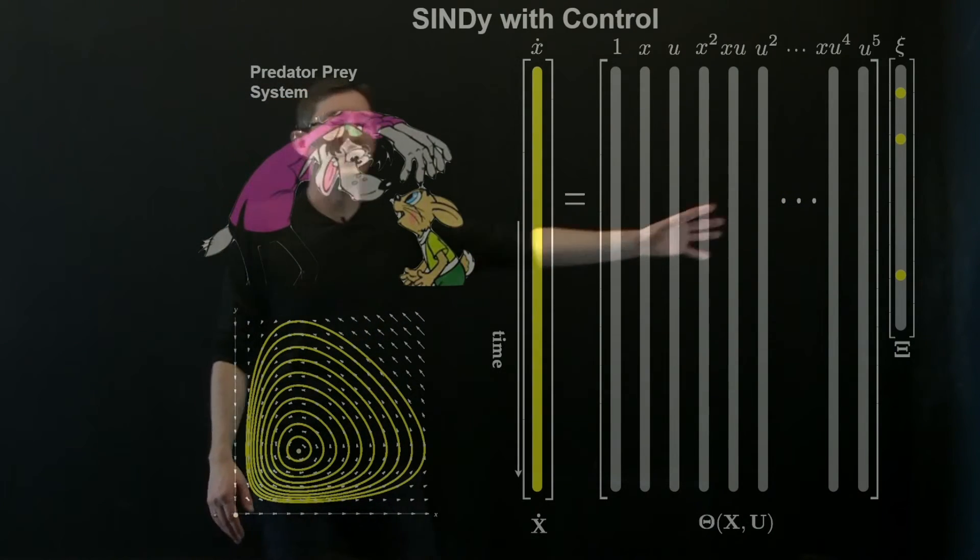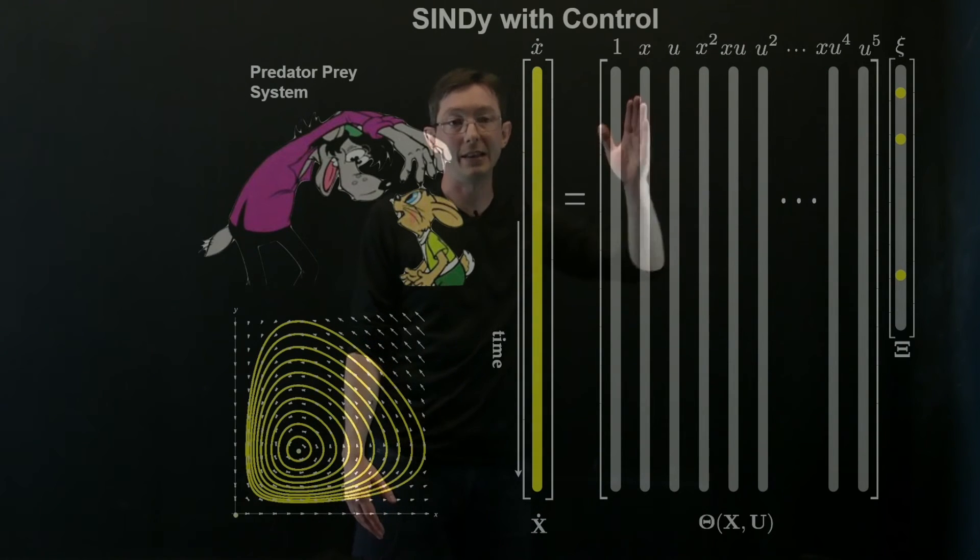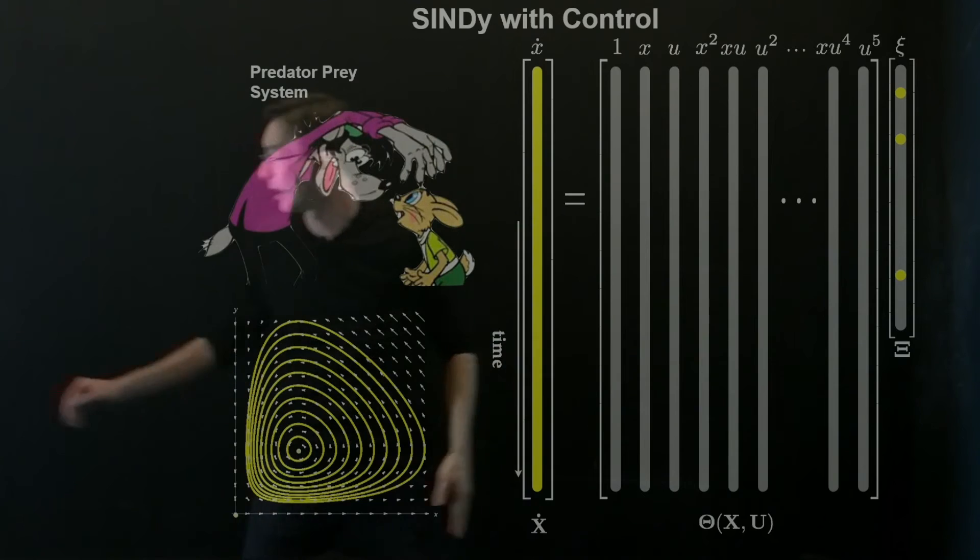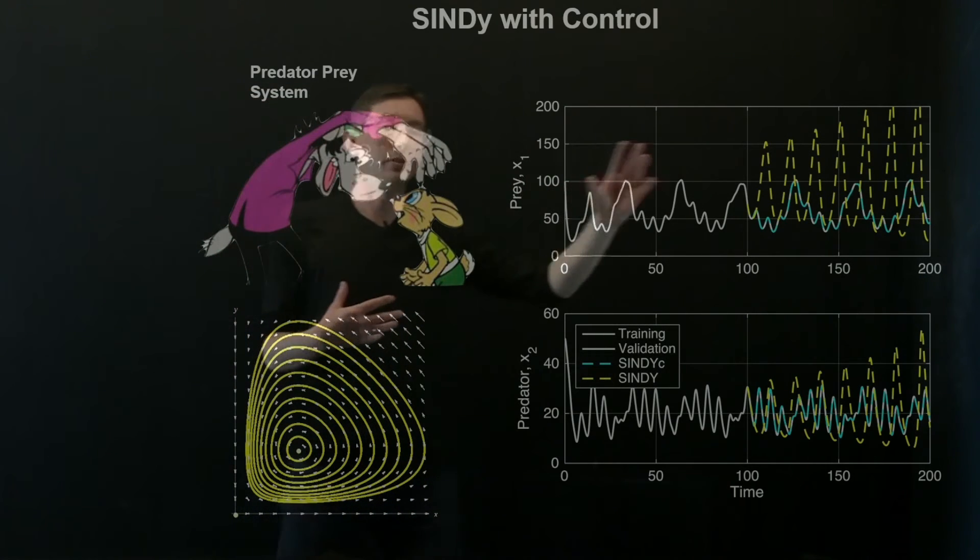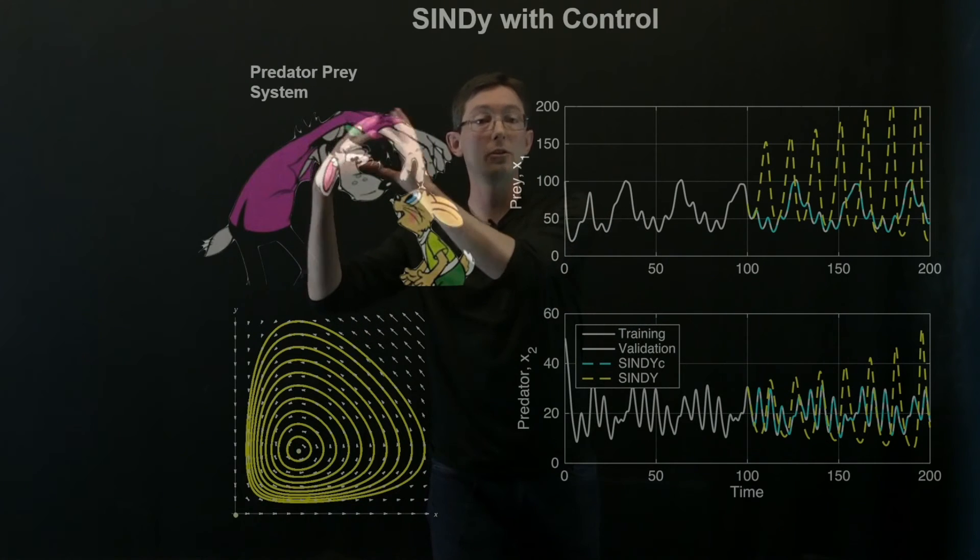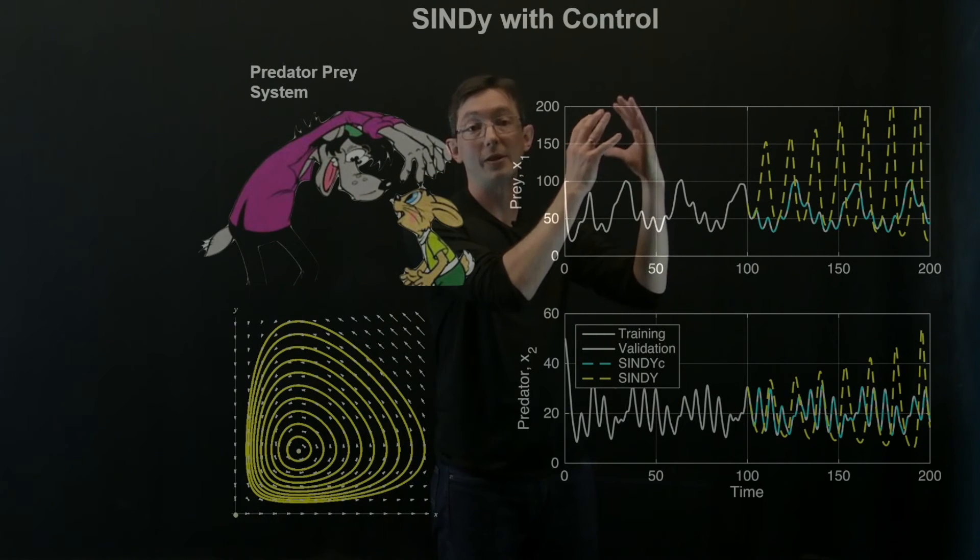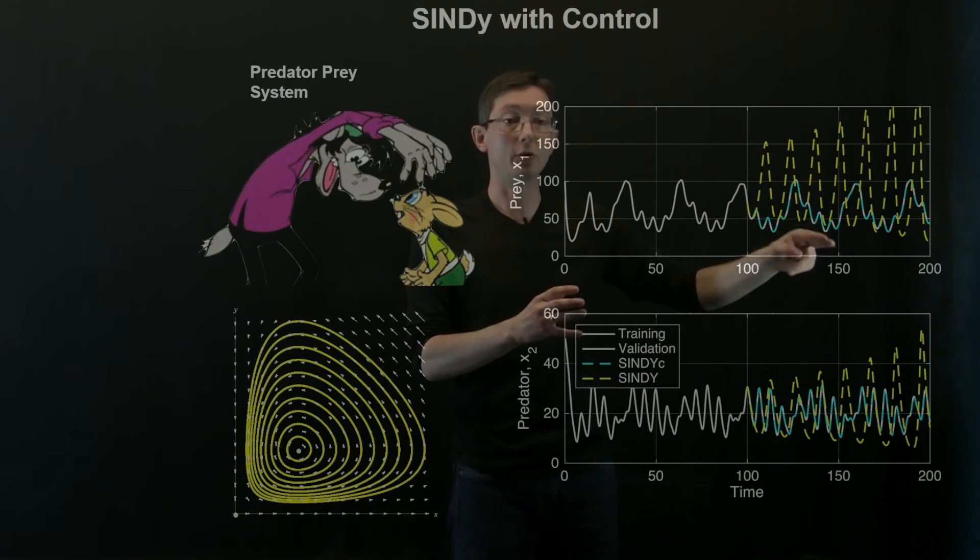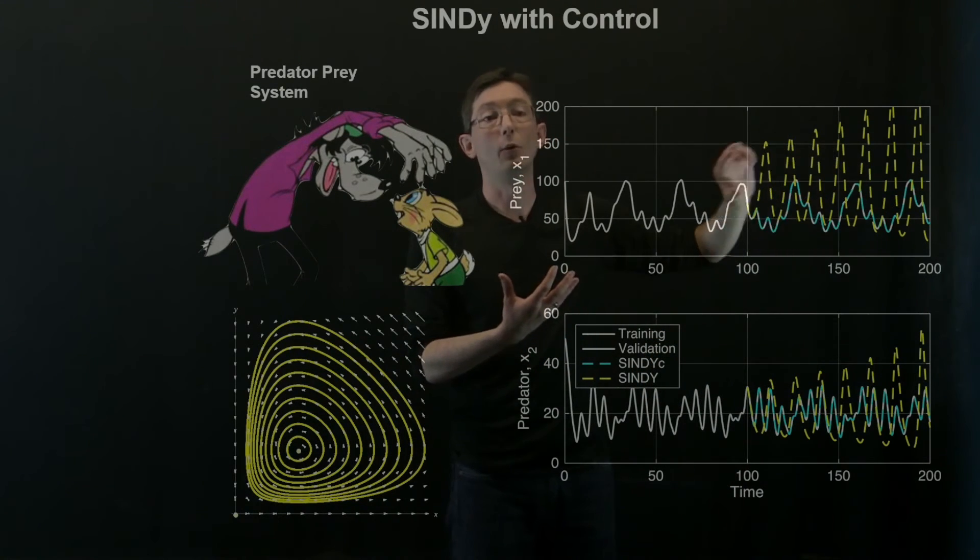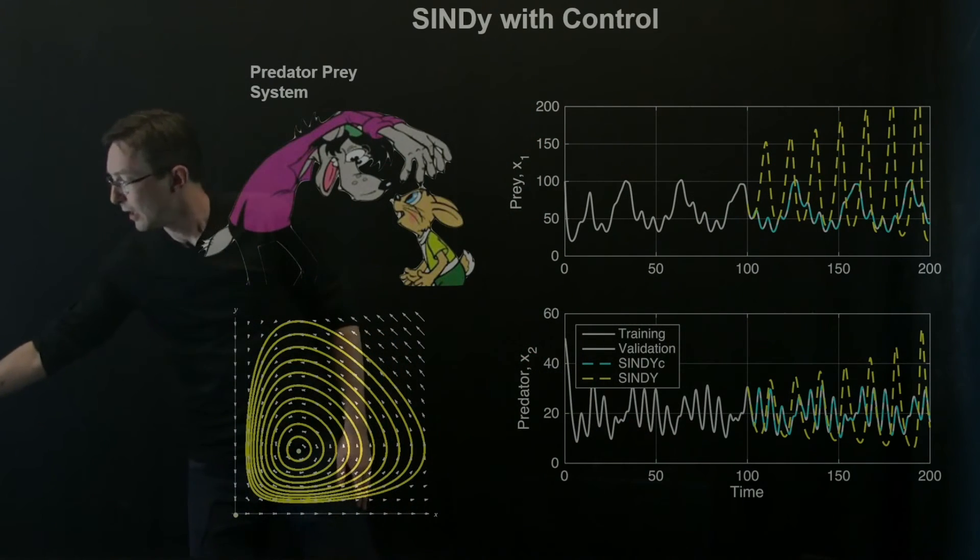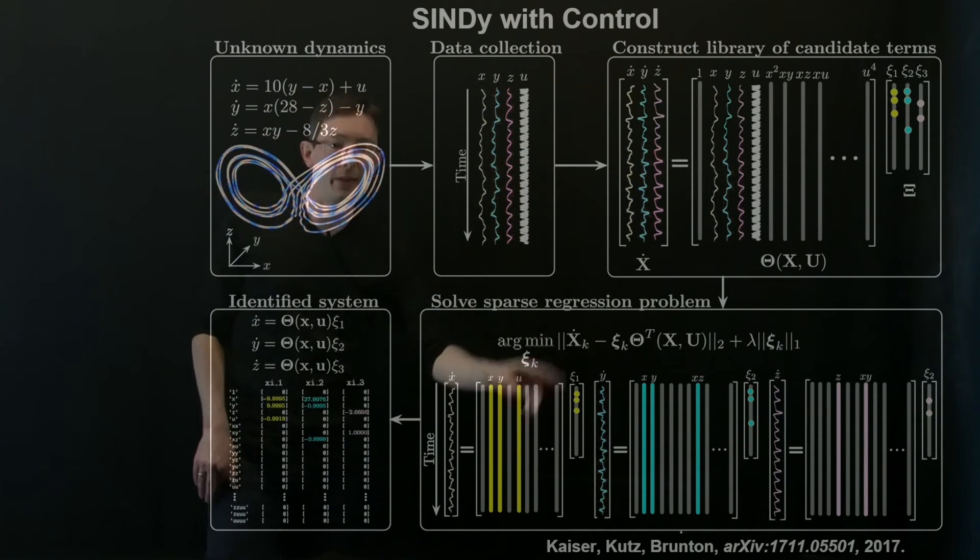Basically you build this augmented library that has not just your state dynamics but also takes into account the actuation, so that when you measure your dynamics and train the model it disambiguates the internal nonlinear dynamics from the effective actuation and control. So that if I change my control strategy at some point, my SINDy with control model is able to compensate whereas a naive SINDy model would fail.